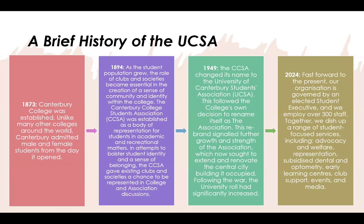Fast forward to today — 2024 — UCSA is a very large organization with 15 elected student executive members, over 300 staff members in a variety of different departments, and we oversee around 160 student clubs.